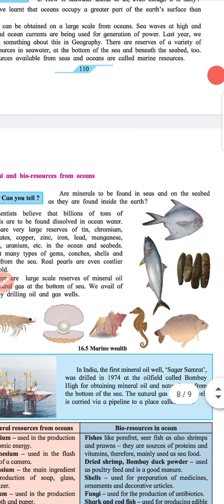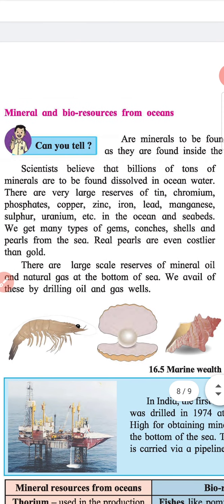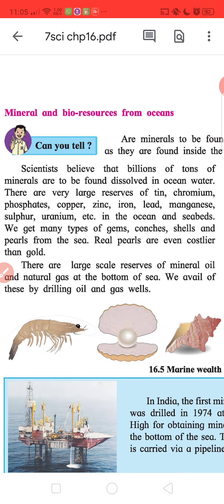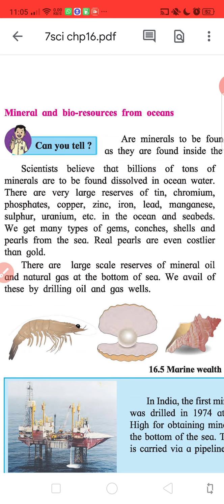Minerals are found in seas and on the seabed, just as they are found inside the earth. Scientists believe that billions of tons of minerals are dissolved in ocean water. There are large reserves of tin, chromium, phosphates, copper, zinc, iron, lead, manganese, sulphur, uranium, etc., in the ocean and seabeds. We get many types of gems, conches, shells and pearls from the sea. Real pearls are even costlier than gold. There are large reserves of mineral oil and natural gas at the bottom of the sea. We avail of these by drilling oil and gas wells.